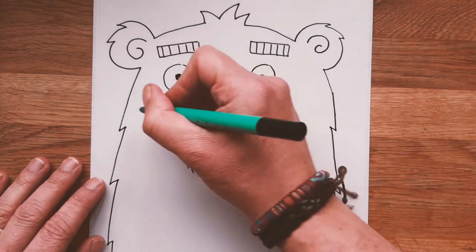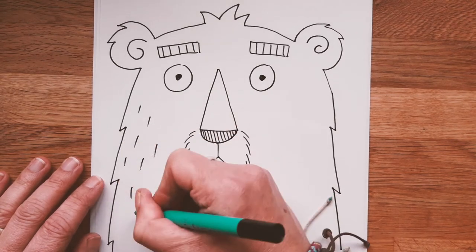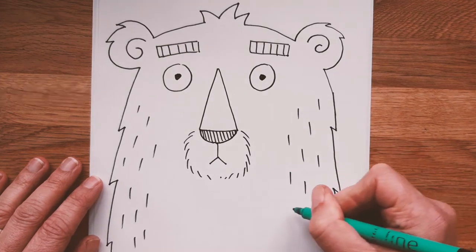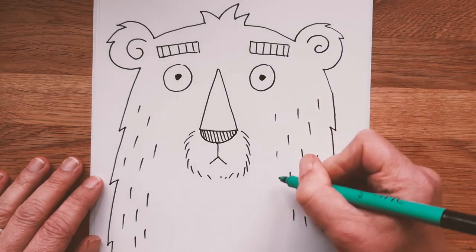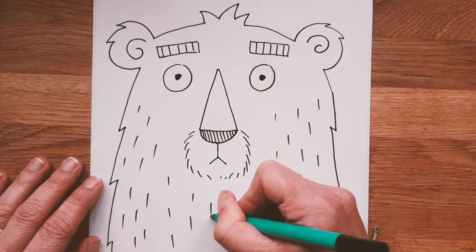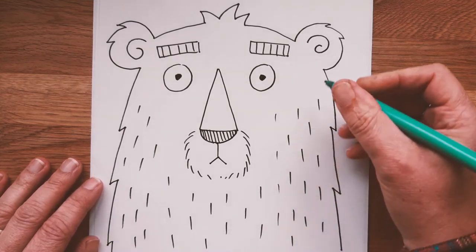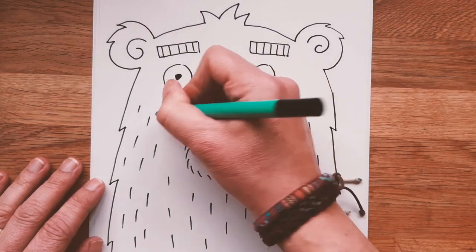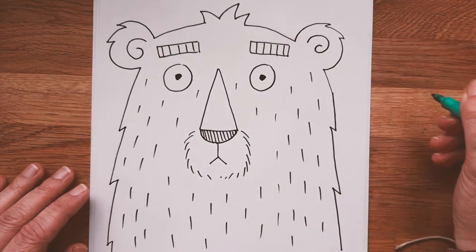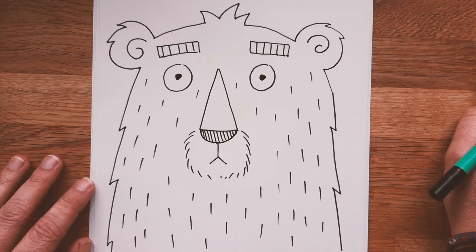And now all that's left is some little dashes to show his furry texture. Do them all over his body. Now later on if you like as well you could color your bear in. In my story my bear is a sort of orange color. Not in any way a nod to Donald Trump but that's just the color he is. But you could do him any color you like. You'd be brown, green, blue, whatever you fancy.